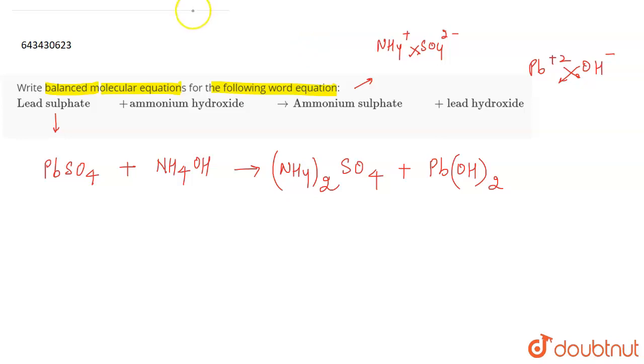Now we have to balance this chemical equation. Now what do we mean by balancing the chemical equation? Balancing the chemical equation means that all the number of atoms in the reactant side and the product side should be equal.